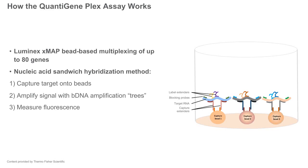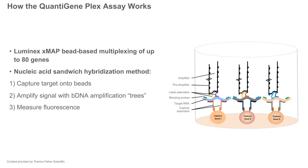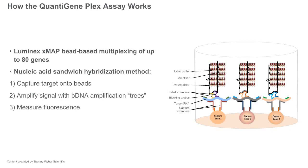The capture extenders, label extenders, and blocking probes all comprise the target-specific probe set designed and provided by Thermo Fisher. The branched DNA oligonucleotides then form the signal amplification structure: a pre-amplifier hybridizes to the label extender pairs, many amplifiers hybridize to each pre-amplifier, and many label probe oligonucleotides hybridize to each amplifier. The label probe is conjugated with biotin, so when streptavidin-phycoerythrin is added in the last step, a fluorescent signal is created and measured.